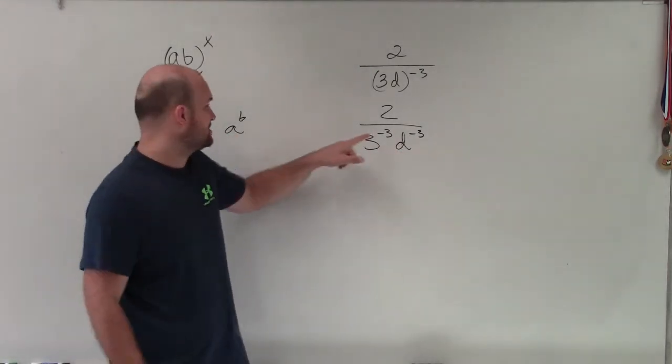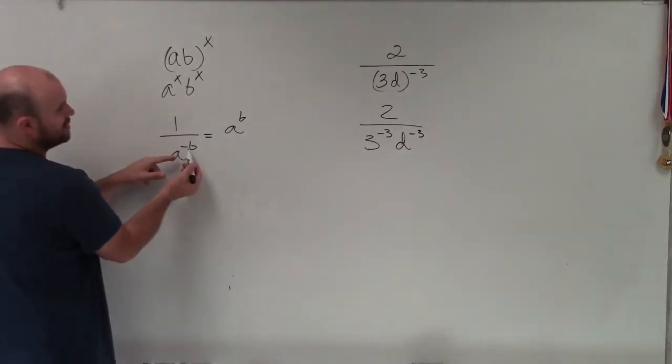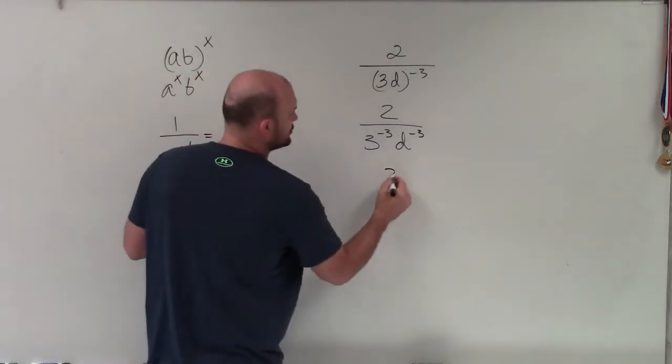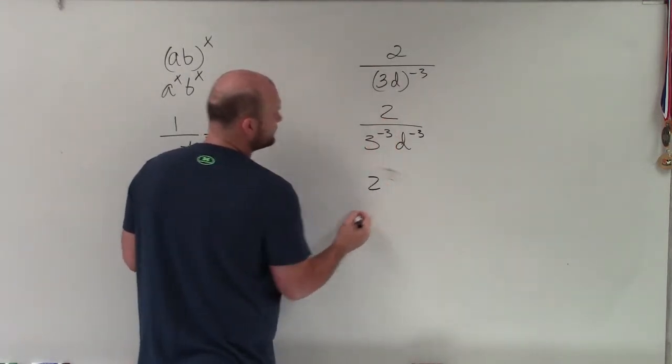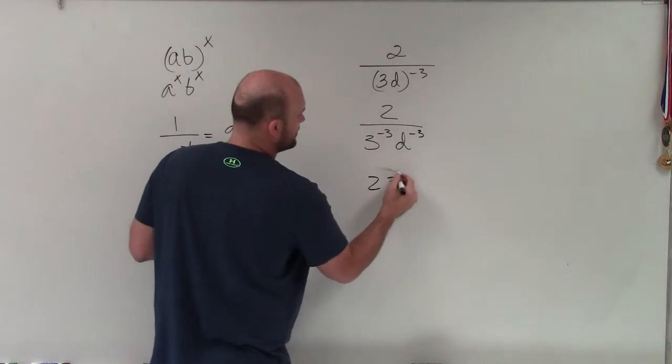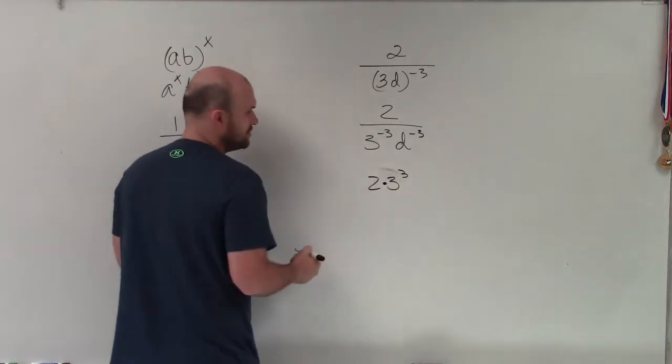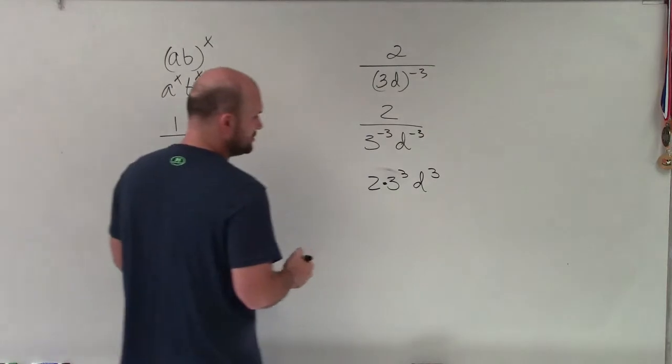So therefore, to make these exponents positive, all I simply need to do, if they're in the denominator negative and I need to make them positive, I just put them in the numerator. So therefore, 2, there's no reason to move the 2. 3, I can move this to 3 cubed. So 2 times 3 cubed times d cubed.